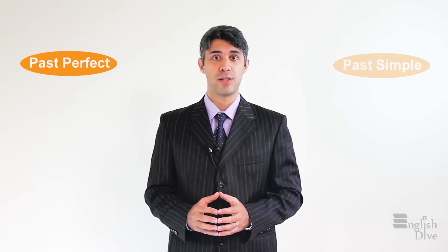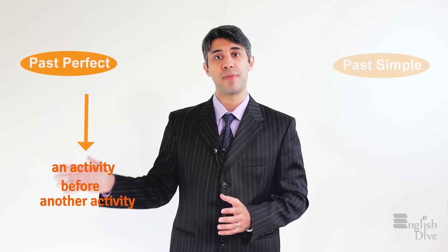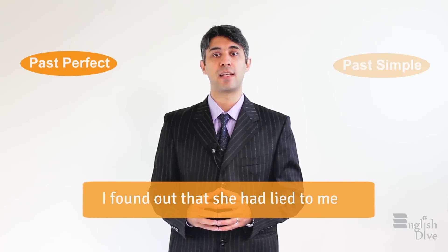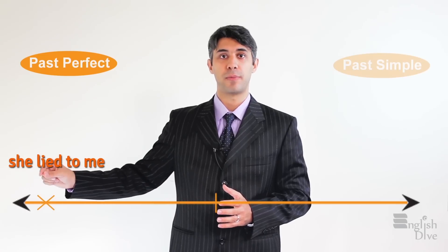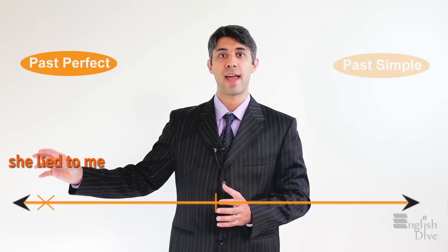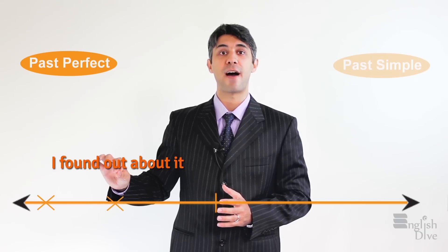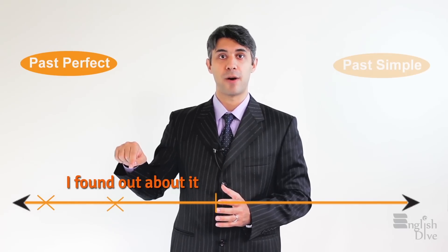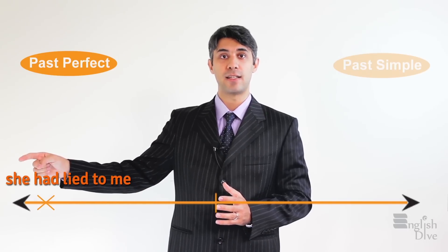The past perfect is used to talk about an activity before another activity in the past. Let's look at this example: 'I found out that she hadn't lied to me.' In the timeline, 'she lied to me' is a point in the past. That event happened before another point in time at which I found out about it. She lied to me, and then I found out about it. So I say, 'I found out that she had lied to me.'